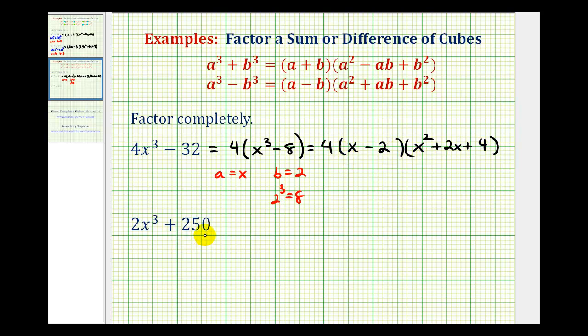Looking at our second example, we have 2x³ plus 250. Again, notice in its current form, we do not have a sum of cubes, but we do have a common factor of two.